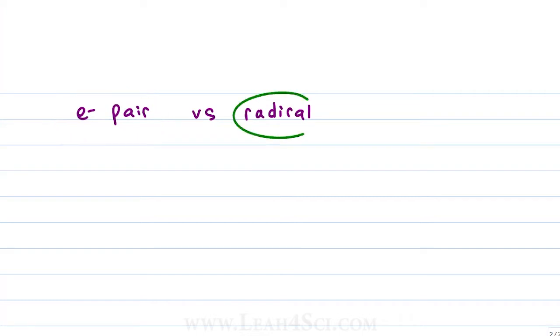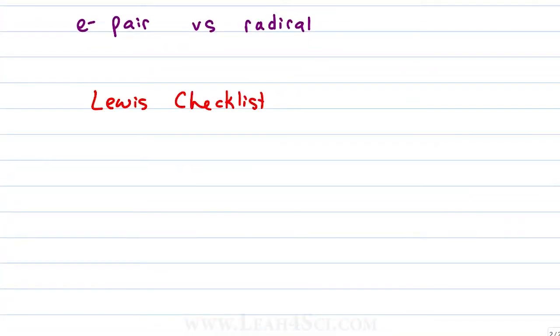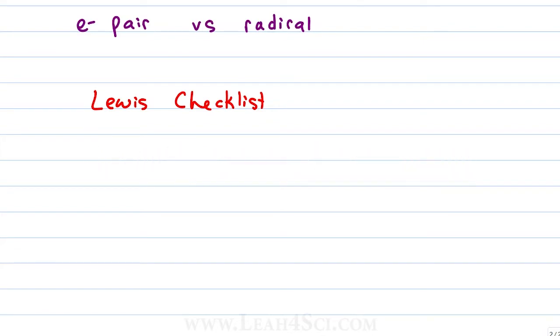Radicals which show up less frequently refer to a lone electron. That means a single electron without a pair, without a partner, making it unstable and very reactive. When it comes to Lewis structure for radicals, we're going to use the same approach that I teach for regular Lewis structures which you can find linked below or see video 5 in my Orgo Basics series at leah4sci.com slash orgobasics. As a reminder, the checklist includes atoms, octet, electrons and formal charge.